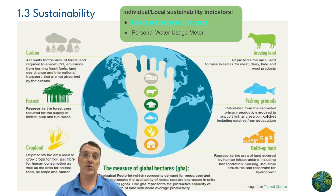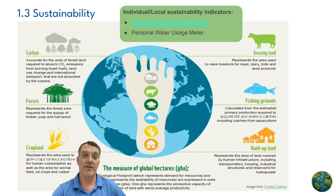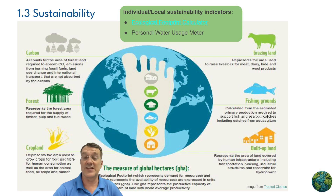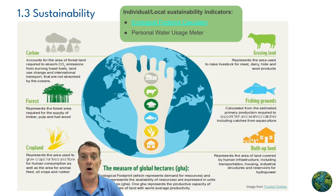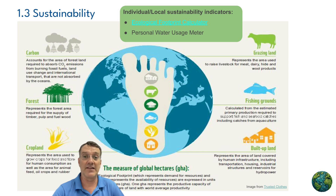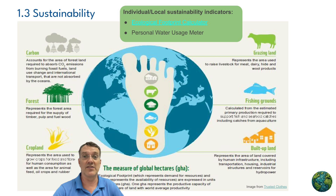At the individual or local level, you have an ecological footprint calculator. This measures the impact of your lifestyle on the planet. It considers the amount of land that's necessary to produce everything you need to stay alive and to absorb the waste that you produce.